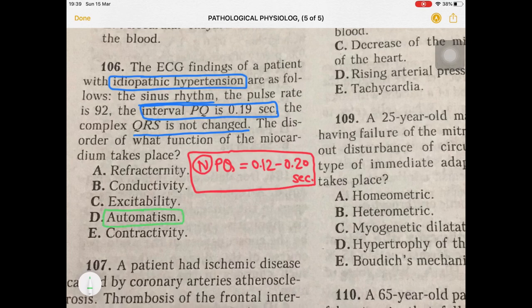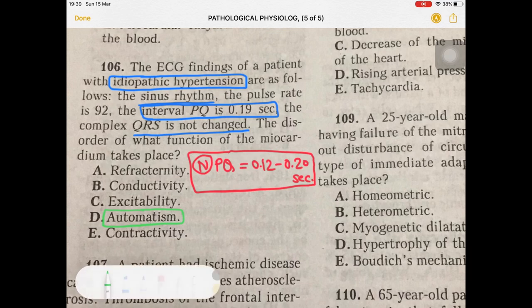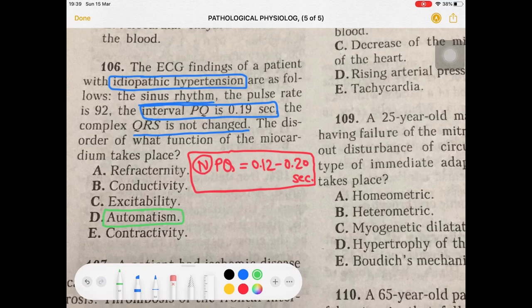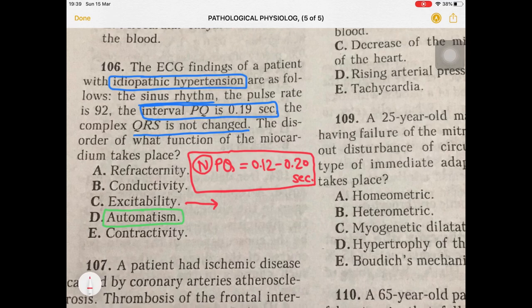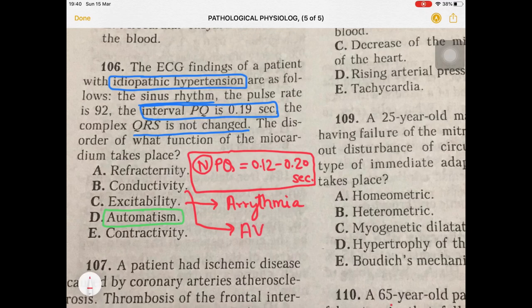One more thing to remember about the option of excitability: excitability is usually disturbed in cases of arrhythmia. Regarding conductivity, disturbance of conductivity happens when there is a problem between the atrium and the ventricle — that is, AV nodal disturbance may lead to a conductivity problem. For example, third degree AV block is an example of a conductivity disturbance.